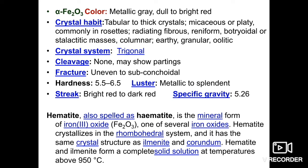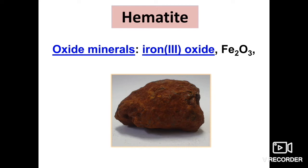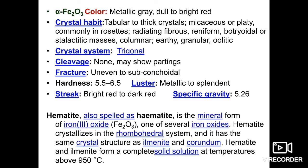Hematite fracture is uneven to subconchoidal. Hardness is 5.5 to 6.5. Luster is metallic to splendent. The streak of hematite is very important — it is bright red to dark red. Color is metallic gray to dull light gray, but streak is bright red to dark red. You must keep in mind both the streak and the color.